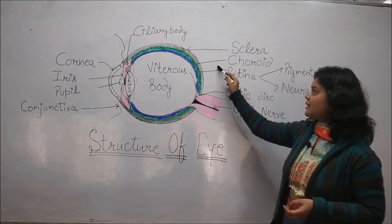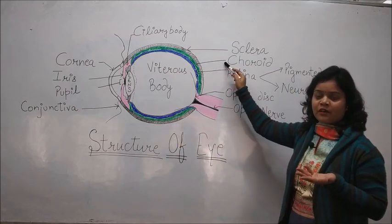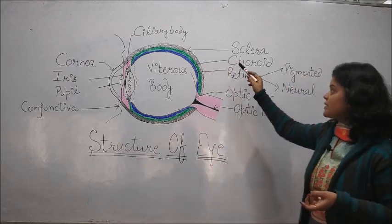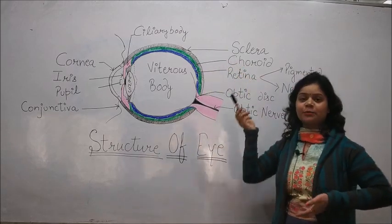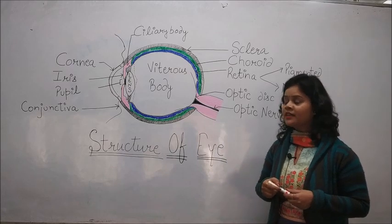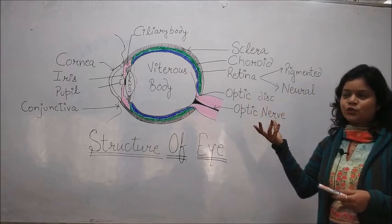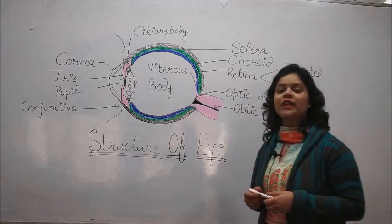In the middle, there is a tunica vasculosa, also known as the choroid. Choroid is a highly pigmented and highly vascular layer. It is a nutritive layer. The main work of choroid is to provide the nutrition.